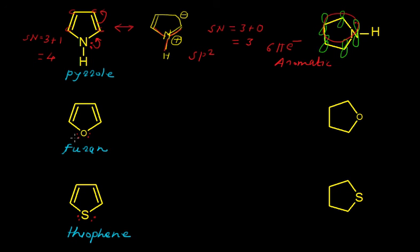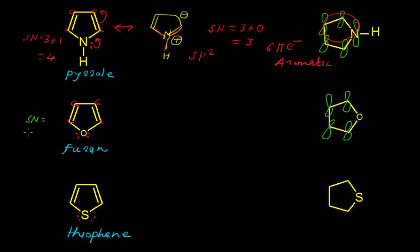Similarly, let us check whether furan is aromatic or not. In furan we have 4 carbon atoms and 1 oxygen. On oxygen we have 2 lone pairs of electrons, and all 4 carbon atoms are sp2 hybridized, so we can write the free p orbital on each carbon like this. The steric number of this oxygen is: 2 sigma bonds plus 2 lone pairs of electrons, which equals 4 — and that is against Hückel's rule for aromaticity.